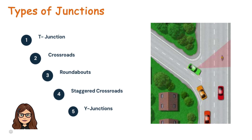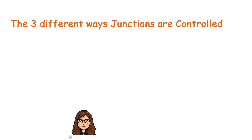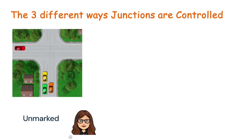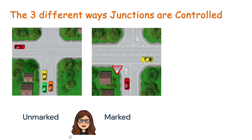For instance, at a T-junction you must give way to traffic on the main road when you're coming from a minor road. Some junctions are unmarked, meaning there are no road markings or signs to guide you. These require extra caution as you need to rely on your judgment and knowledge of the right of way rules.